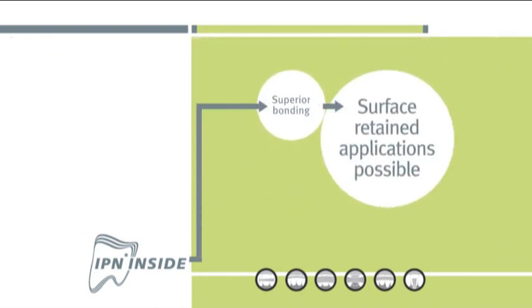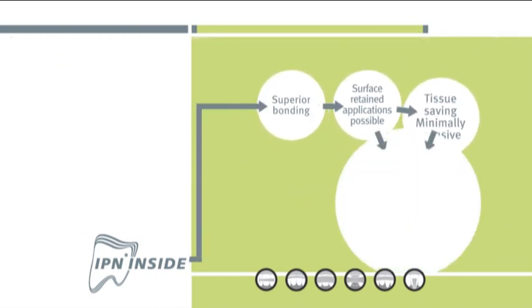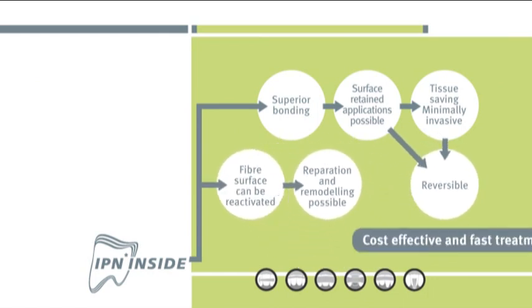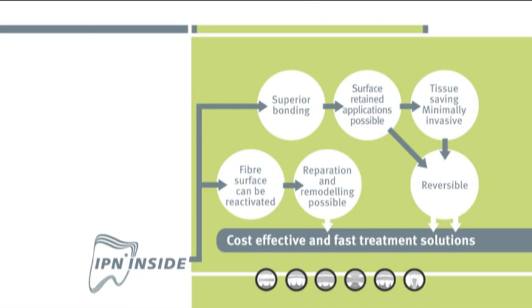All EverStick products have a unique, patented, interpenetrating polymer network structure, IPN. Clinically, this leads to superior bonding, enabling reliable surface-retained applications and perfect handling properties.